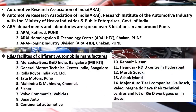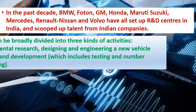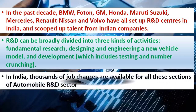R&D facilities of different automobile manufacturers are shown on screen, including Mercedes-Benz R&D India Bangalore, General Motors Technical Center Bangalore, Rolls-Royce India Private Limited, Tata Motors Pune, Mahindra Chennai, Ashok Leyland, Volvo Commercial Vehicles, Bajaj Auto, Continental Automotive, and others. In the past decade, BMW, Photon, GM, Honda, Maruti Suzuki, Mercedes, Renault-Nissan, and Volvo have all set up R&D centers in India. R&D can be broadly divided into fundamental research, designing and engineering a new vehicle model, and development including testing and number crunching. Thousands of job chances are available in India for all these sections of the automobile R&D sector.